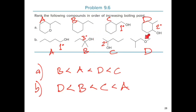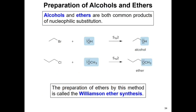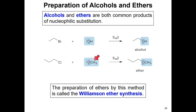Both alcohols and ethers are common products of substitution reactions. A primary alkyl halide reacts with hydroxide via an SN2 reaction to form a primary alcohol. Likewise, a primary alkyl halide will undergo an SN2 reaction with an alkoxide ion, which is also a strong nucleophile, resulting in formation of an ether product. Any preparation of ethers using this method is known as Williamson ether synthesis.